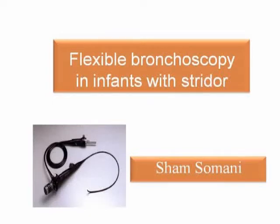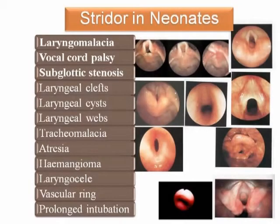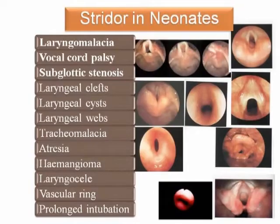This video shows the role of flexible bronchoscopy in infants with stridor. Stridor in infants may be potentially serious. Laryngomalacia is the most common cause, followed by vocal cord palsy and subglottic stenosis. Other rare causes include laryngeal clefts, cysts, atresia, hemangioma, laryngocele, and vascular rings.